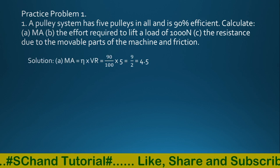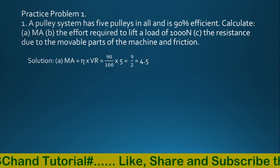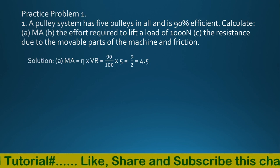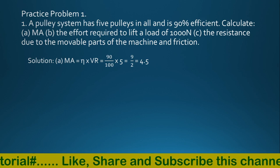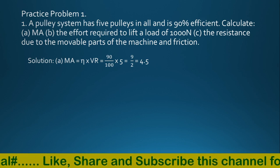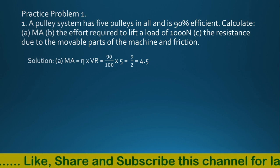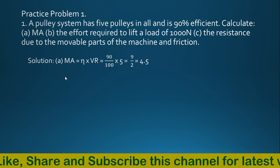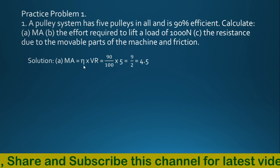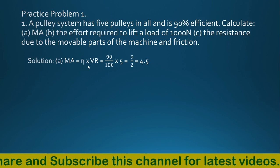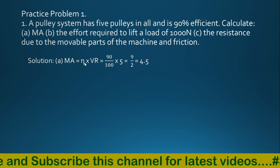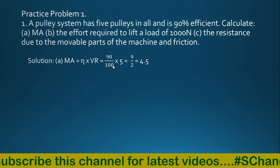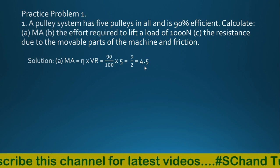The pulley system has 5 pulleys in all and is 90% efficient. Calculate the mechanical advantage. Since efficiency equals mechanical advantage over velocity ratio, mechanical advantage is equal to efficiency into velocity ratio — that is 90 over 100 into 5, which equals 4.5.